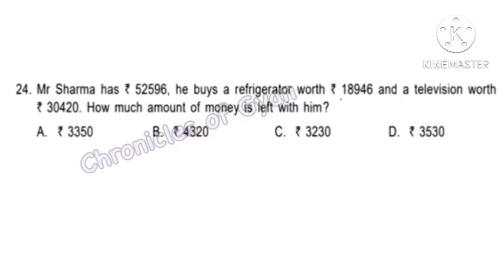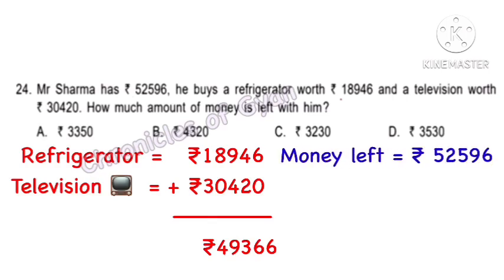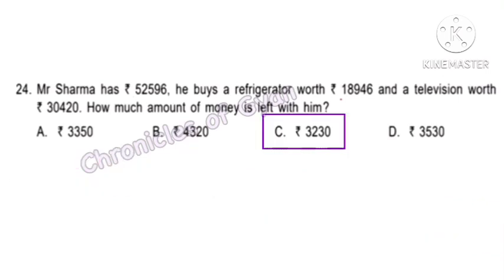Question 24. Mr. Sharma has Rs. 52,596. He buys a refrigerator worth Rs. 18,946 and a television worth Rs. 30,420. How much money is left? Adding the costs: Rs. 49,366. Amount left: Rs. 52,596 minus Rs. 49,366 equals option C — Rs. 3,230.